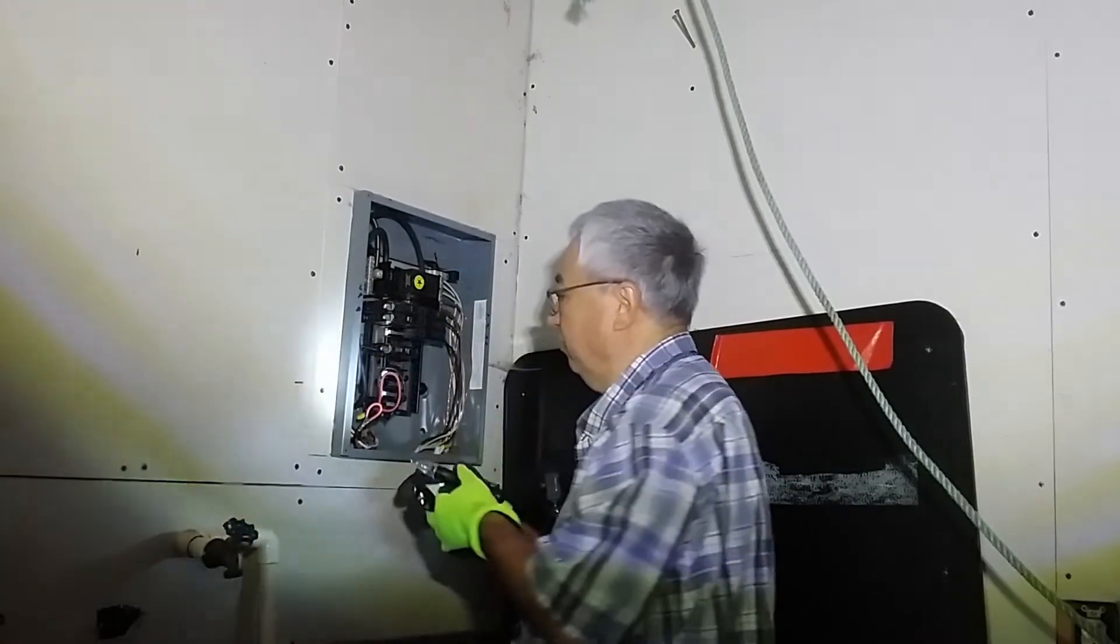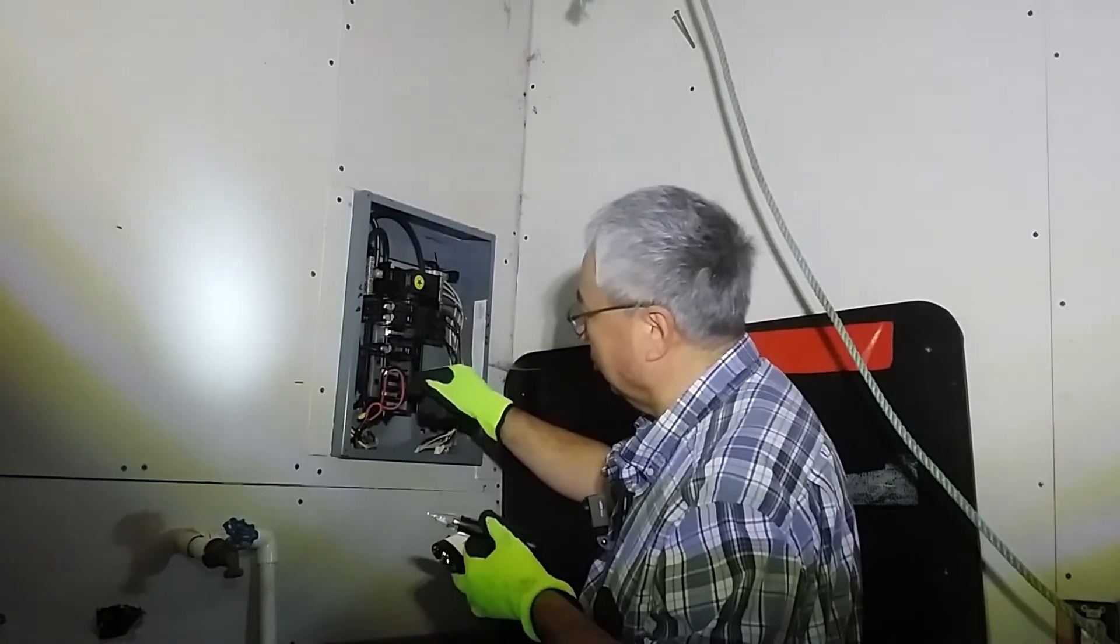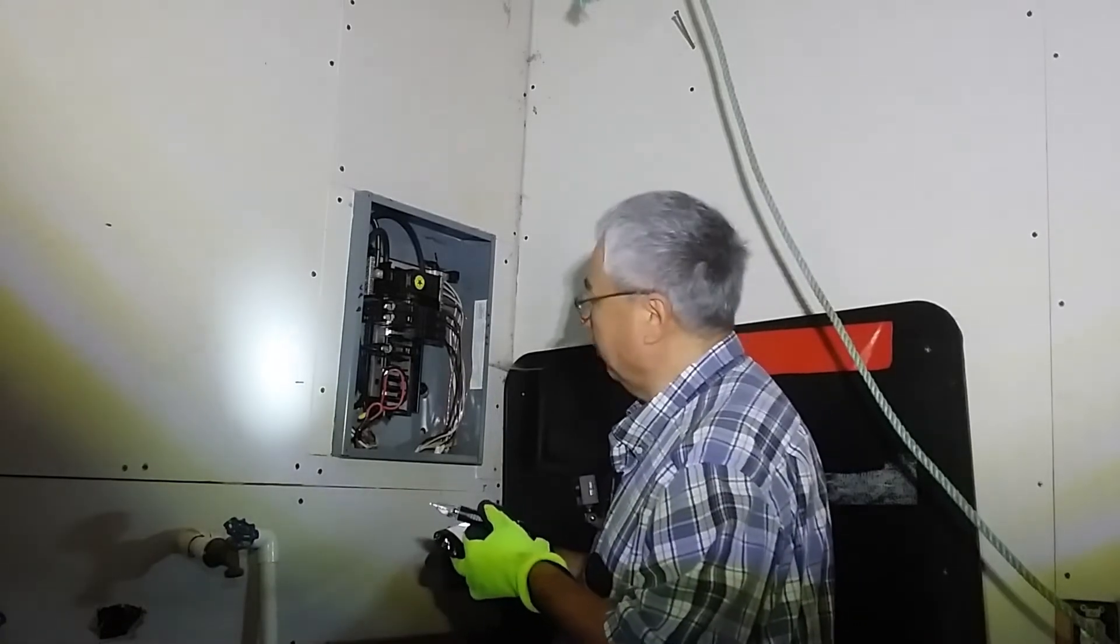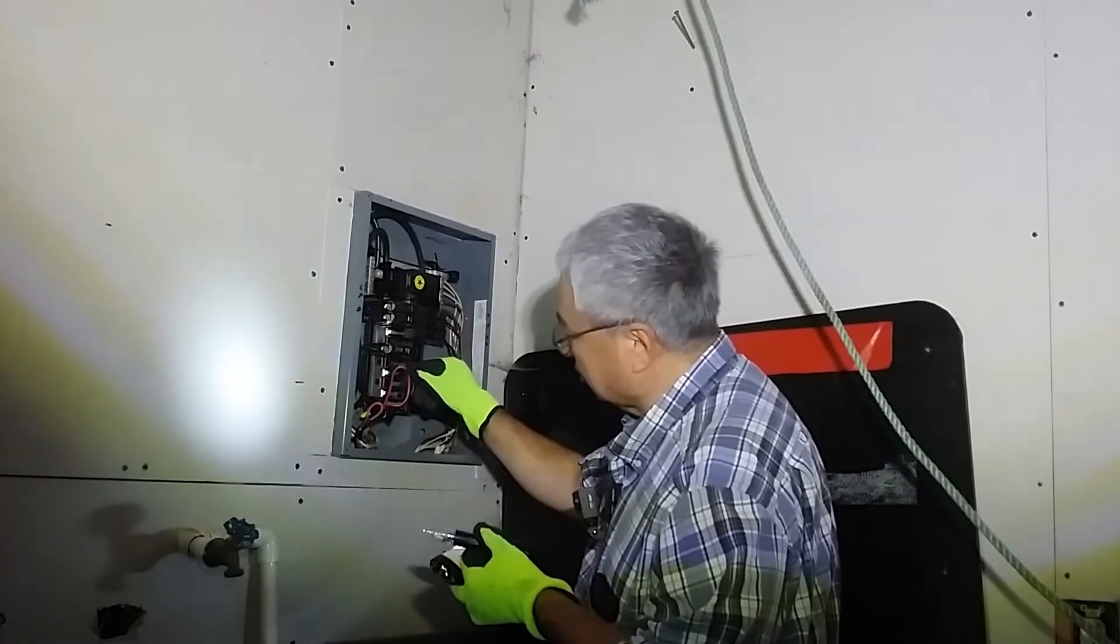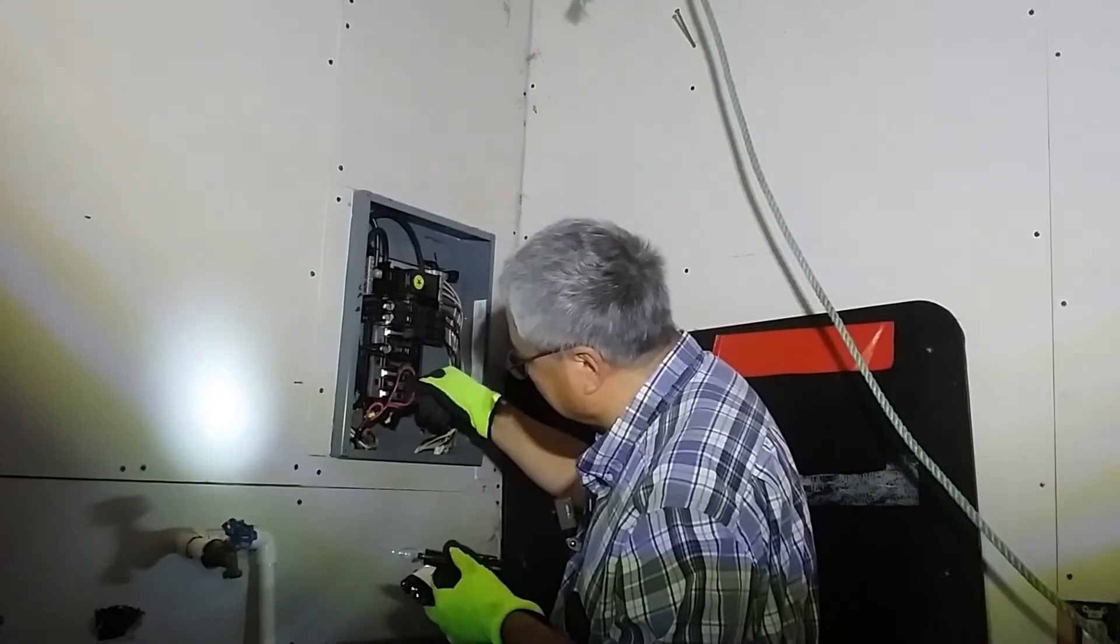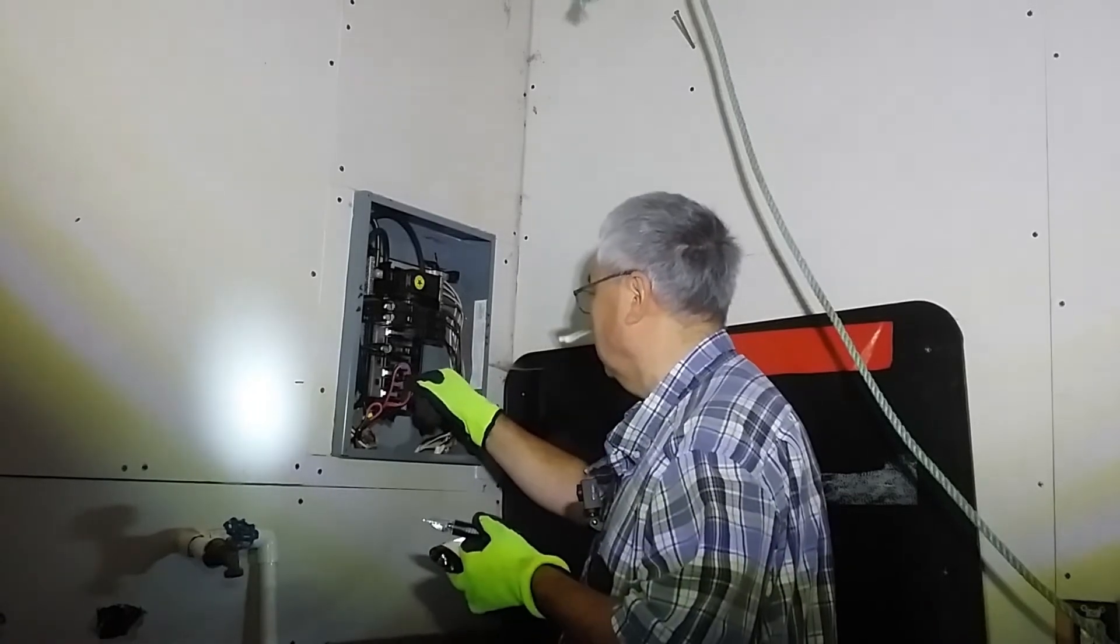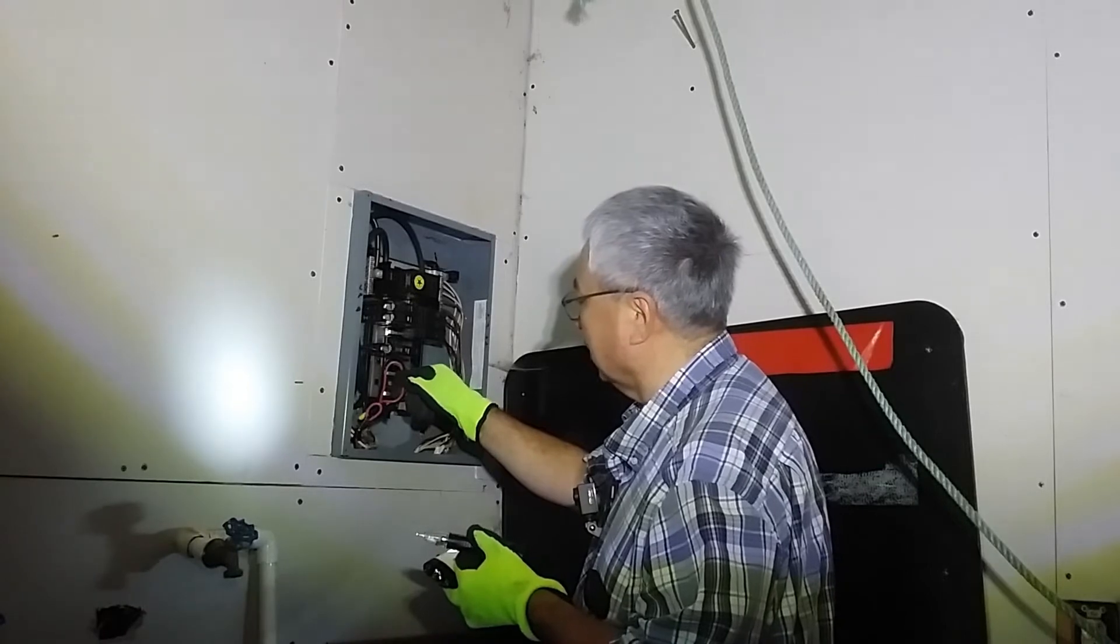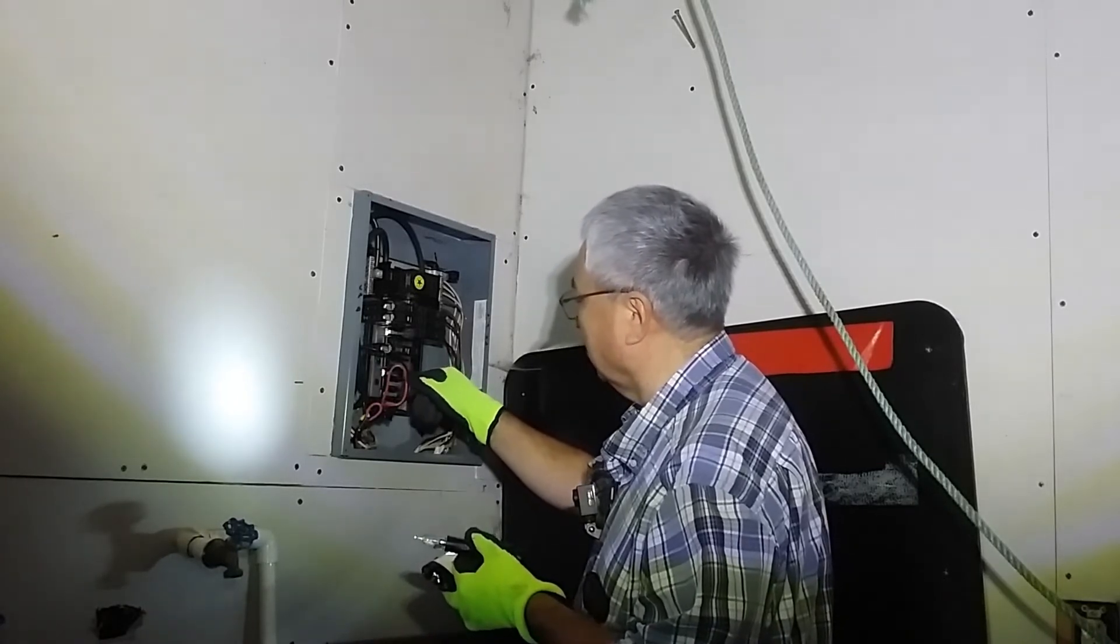Okay, I believe I found the line that probably used to go to where the dryer outlet breaker was. It looks like somebody just disconnected it and taped it off here, but I'm going to do some continuity checks just to make sure that this indeed is what I think it is.